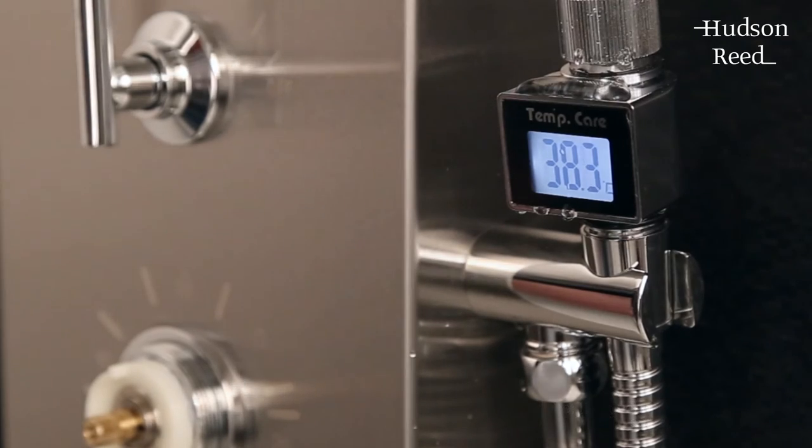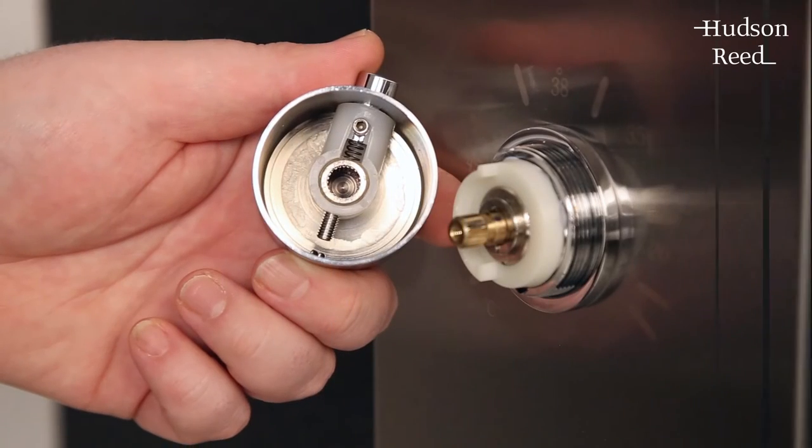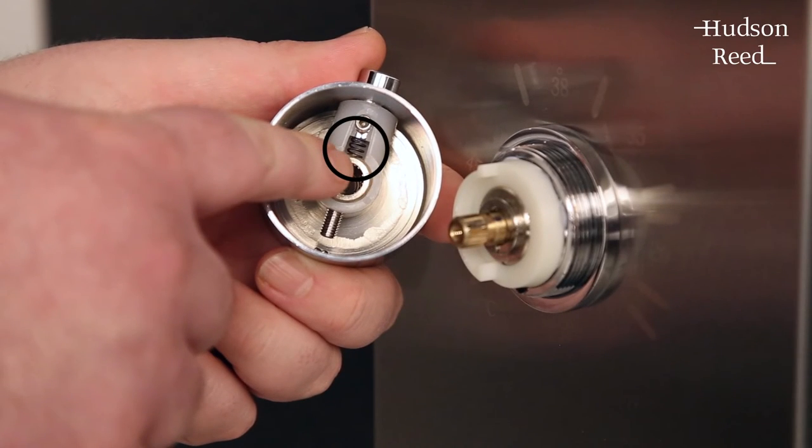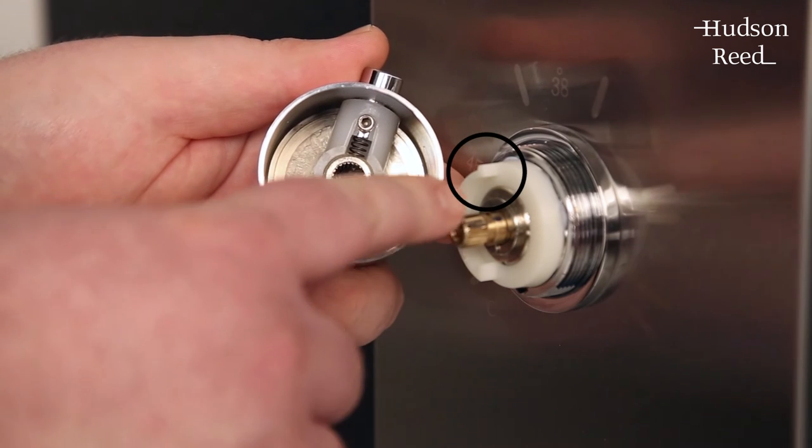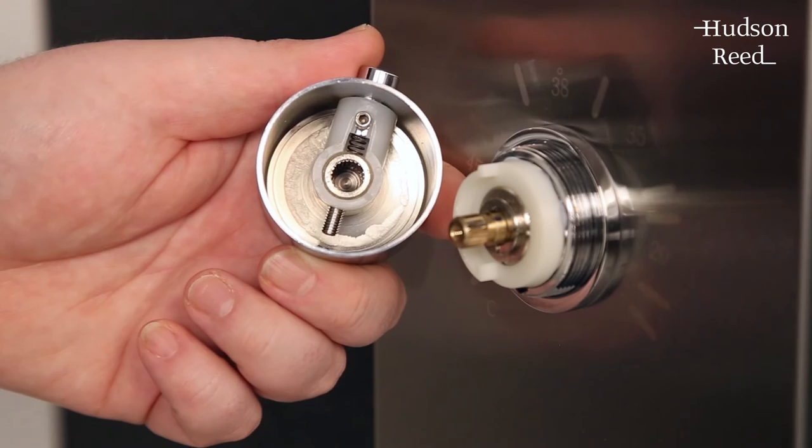Once you have your maximum temperature, turn off the shower completely and place the control handle back onto the spindle, ensuring that the lug of the handle fits into the lug on the control spindle. This prevents you from turning the handle any further anti-clockwise without pressing the override button.